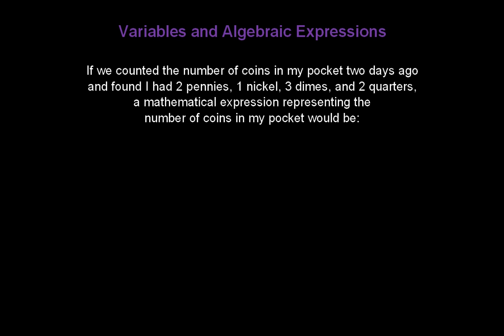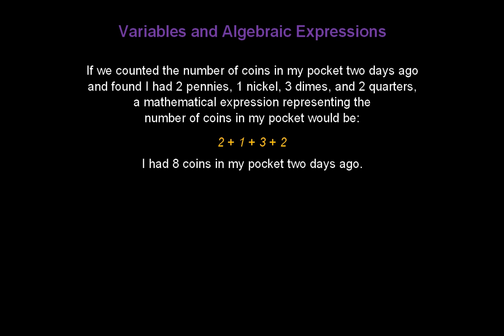Now let's suppose we counted the number of coins in my pocket two days ago and found I had two pennies, one nickel, three dimes, and two quarters. A mathematical expression representing the number of coins in my pocket then would be two plus one plus three plus two. I had eight coins in my pocket two days ago.